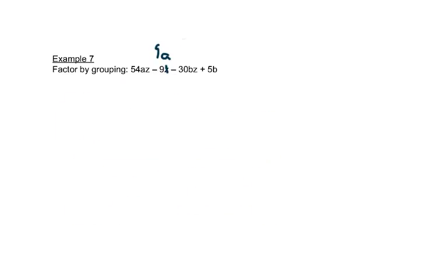So now let's look at another example. Again, we're going to split it up into two groups. We have 54az minus 9a and minus 30bz plus 5b. Let's look at the greatest common factor, and remember that we're looking at 54 and 9. We practiced a little bit ago, let's do that one more time here.